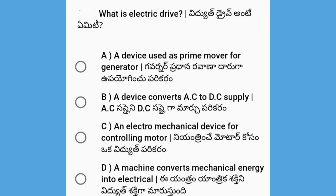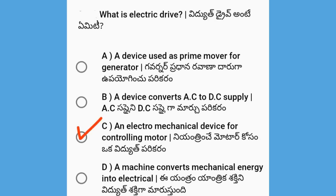Next, what is electric drive? The options are: a device used as prime mover for generator; a device that converts AC to DC supply; an electromechanical device for controlling motor; or a machine that converts mechanical energy into electrical. The answer is an electromechanical device for controlling motor.